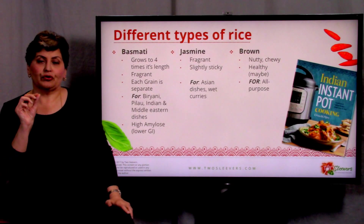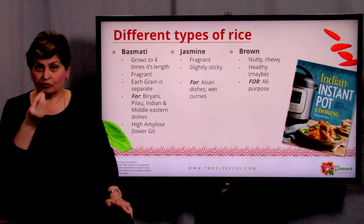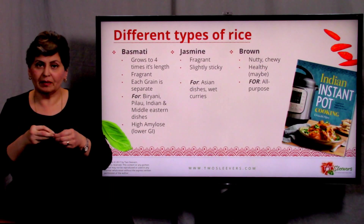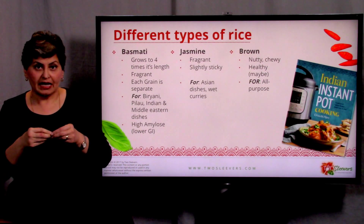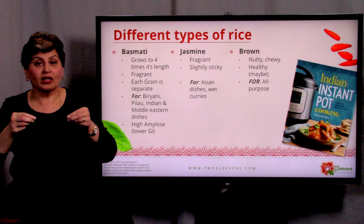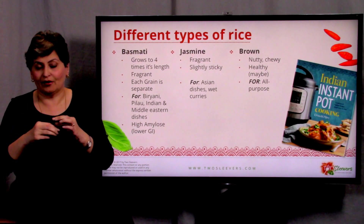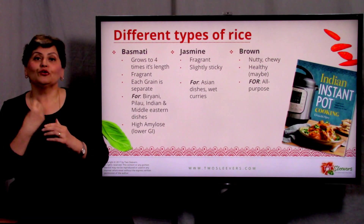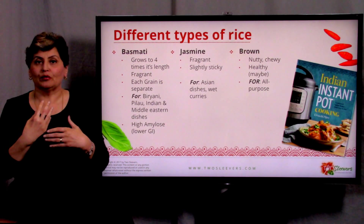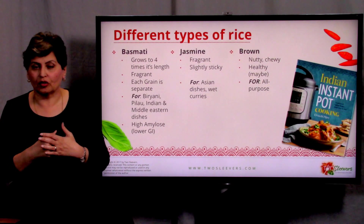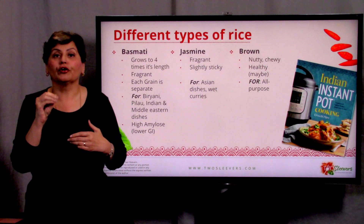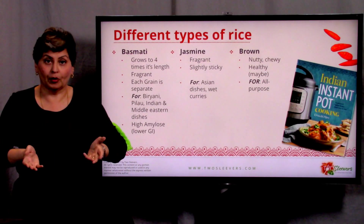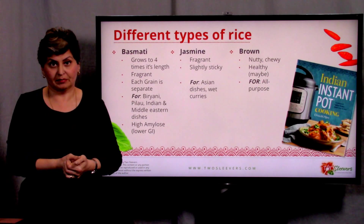Basmati is one of those grains that is distinctively different in terms of aroma — some people say it smells like popcorn popping. The thing about basmati is that as it cooks, it doesn't get fat, it gets long and thin. When you make basmati pulao, dum biryanis, or some Middle Eastern preparations, the hallmark of a good dish like that is that the rice grains don't clump together. So when you're looking for grains that fall apart and remain separate from each other, you really want basmati.